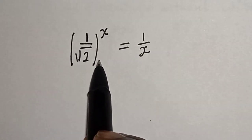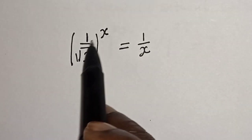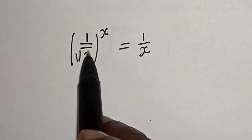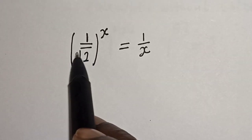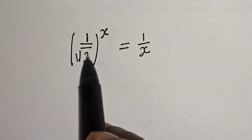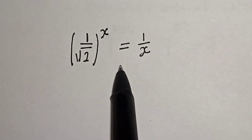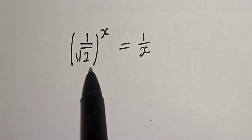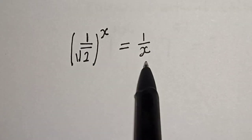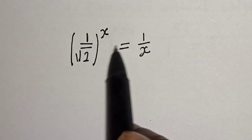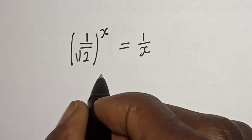Hi everyone, welcome to my class. In this class we want to find the value of s from this given equation: 1 divided by square root of 2 raised to power of s is equal to 1 divided by s. Before we proceed, please don't forget to like, share, comment and subscribe.